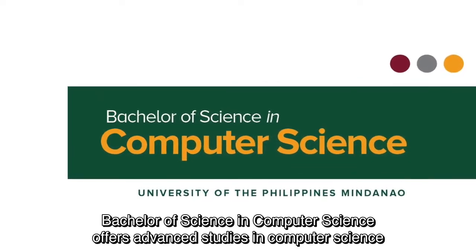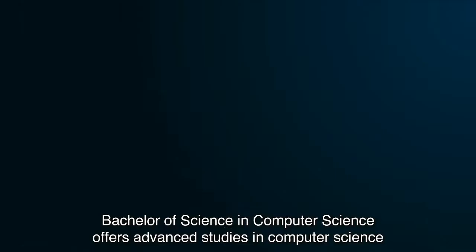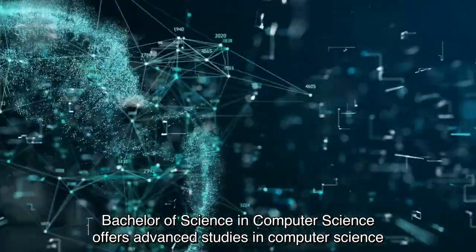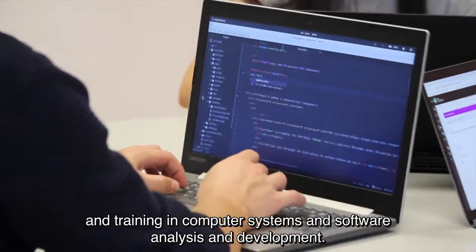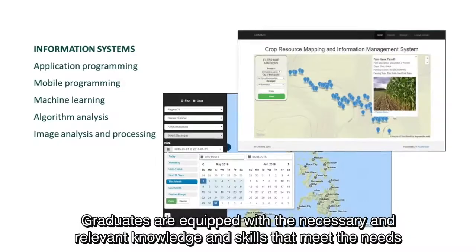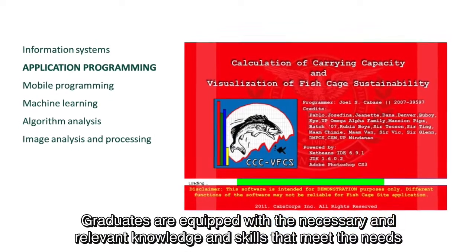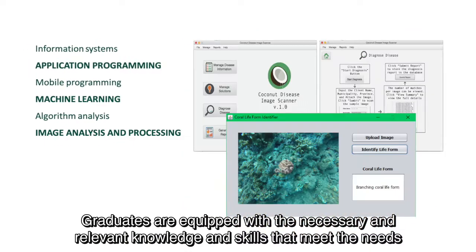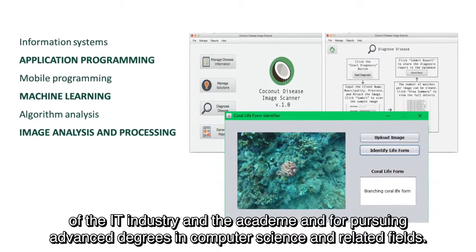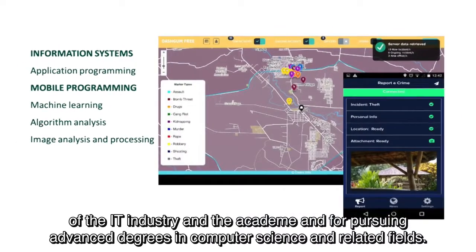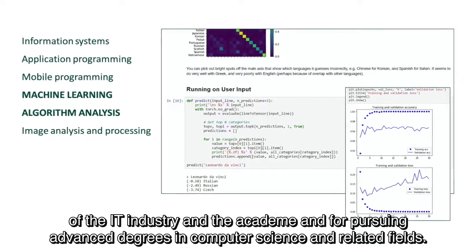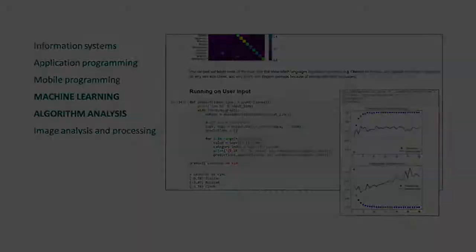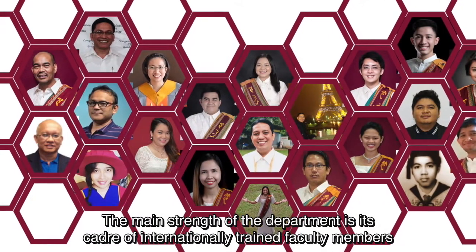Bachelor of Science in Computer Science offers advanced studies in computer science and training in computer systems and software analysis and development. Graduates are equipped with the necessary and relevant knowledge and skills that meet the needs of the IT industry and the academe and for pursuing advanced degrees in computer science and related fields.